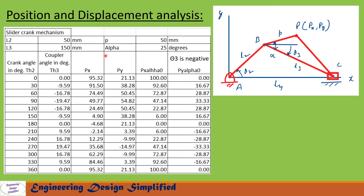Having derived all the necessary equations, let us now solve a problem using Microsoft Excel. The parameters are: crank length l2 = 50 mm, coupler length l3 = 150 mm, p = 50 mm, and alpha = 25 degrees. One column represents crank angle from 0 to 360 degrees at 30-degree intervals. Another column gives coupler angle theta3, then columns for px and py — both when p is offset and when alpha equals 0.